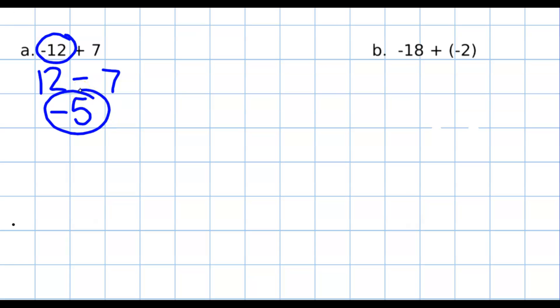Now, if that's confusing, what you're really doing is saying you have more negatives. You have 12 negatives and 7 positives. You have more negatives than you do positives, so the negatives are going to win out. That's why your answer is negative 5. In the second example, negative 18 plus negative 2, the signs are the same. So you just add the two numbers together to get 20, and then you keep the sign. Since both of them are negative, the answer is going to be negative.